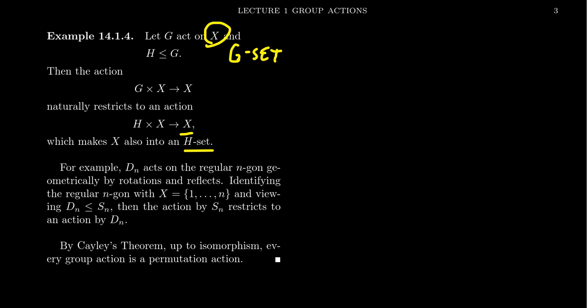For example, we had the permutation action of S_n. One important subgroup of S_n is D_n, the dihedral group — the symmetries of the regular n-gon. D_n naturally acts upon the set {1, 2, 3, ..., n}, where we think of these as the labeled vertices of the regular n-gon. Since D_n is a subgroup of S_n, X is both an S_n-set and a D_n-set. When we think of X as an S_n-set, it's just letters being scrambled. When we think of it as a D_n-set, we're thinking of the regular n-gon and applying its symmetries.